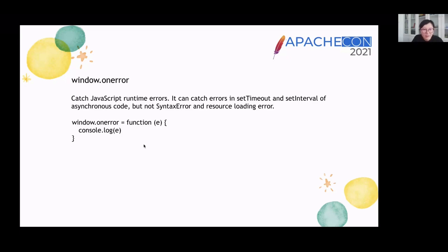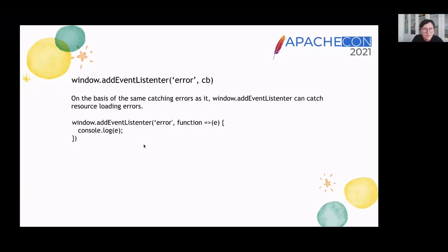window.onerror: it can catch JavaScript runtime errors and catch errors in setTimeout and other async code. But it cannot catch syntax errors and resource loading errors. For the code, when a JavaScript runtime error occurs, the window triggers an error event and executes window.onerror. Building on the same error-catching capability, window addEventListener can also catch resource loading errors.